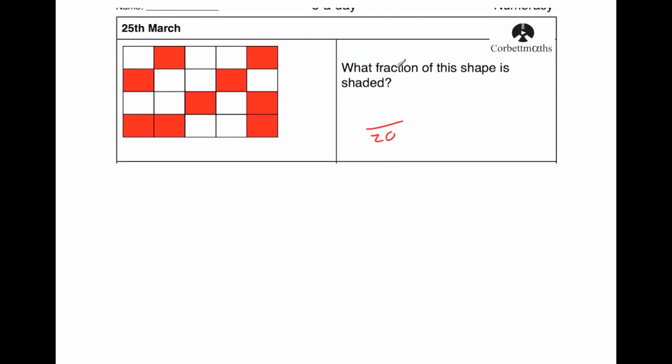And it says, what fraction of the shape is shaded? So make sure you realize that it's shaded. So that's one, two, three, four, five, six, seven, eight, nine. Just check it again, one, two, three, four, five, six, seven, eight, nine. So nine twentieths of that shape is shaded.